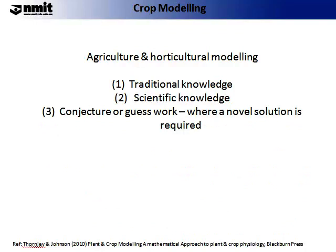There are three areas of wisdom that usually enable the construction of agricultural and horticultural modelling. First, there is traditional knowledge — this is how farming is conducted. Then there is scientific knowledge, based on many hours of rigorous research. And thirdly, there is conjecture or guesswork, which is required where a novel solution is needed to complete the modelling.